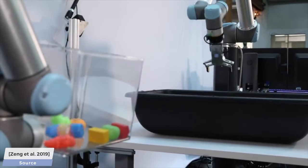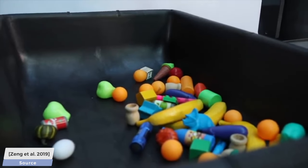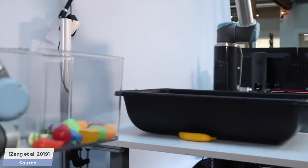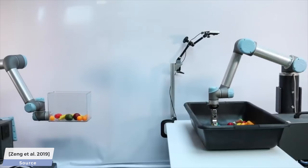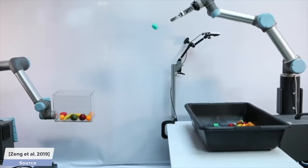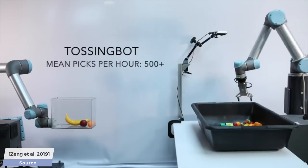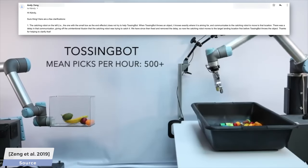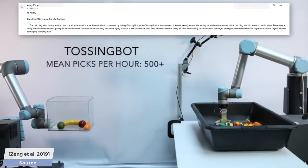Before anyone misunderstands what is going on in the footage here, it almost seems like the robot on the left is helping by moving to where the object would fall after the robot on the right throws it. This is not the case. Here you see a small part of my discussion with Andy Zeng, the lead author of the paper, where he addresses this.